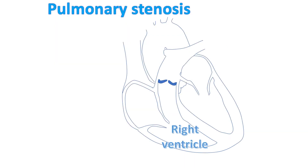When the pulmonary wall is narrowed, the right ventricle finds it increasingly difficult to pump blood into the pulmonary artery. The right ventricular muscle becomes gradually thickened — right ventricular hypertrophy — in an attempt to overcome the obstruction. But when the pulmonary stenosis is very severe, the right ventricle is unable to overcome the obstruction and gradually fails due to the overwork.